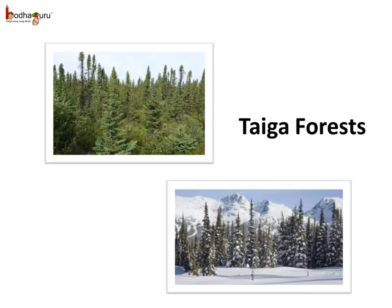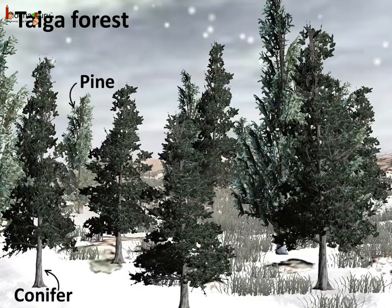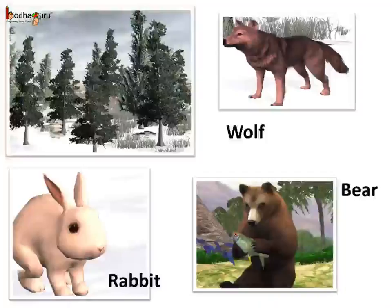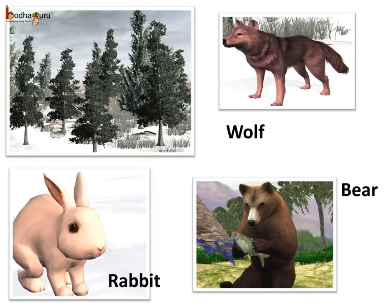Let us see another type of forest. Taiga or the boreal forests of Canada, Russia, Scandinavia, China, Mongolia and Northern Japan are very cold. Here the summer is short and the winters stay for very long. The rainfall here is very low — an average of 40 to 100 cm yearly only. The wolf, deer, rabbit, fox, bear, moose etc. live here. Most of the animals, especially the birds, migrate to warmer regions to survive the long snowy winter, while some animals hibernate, like the bear.